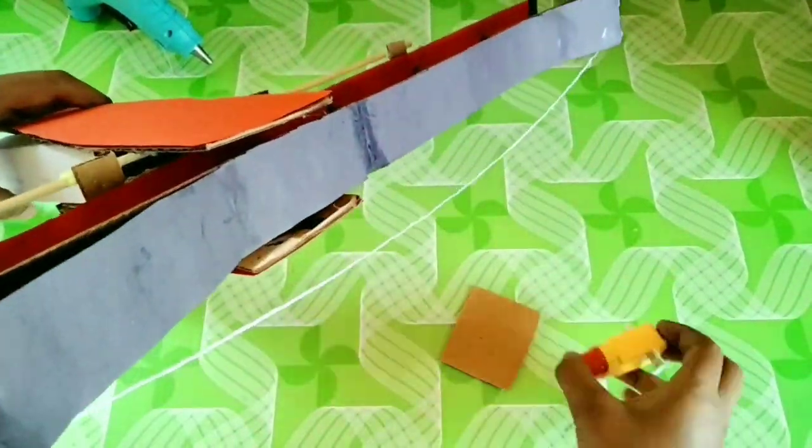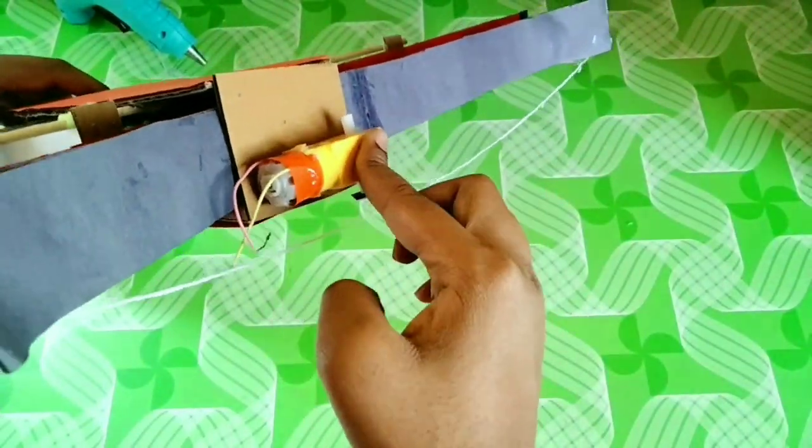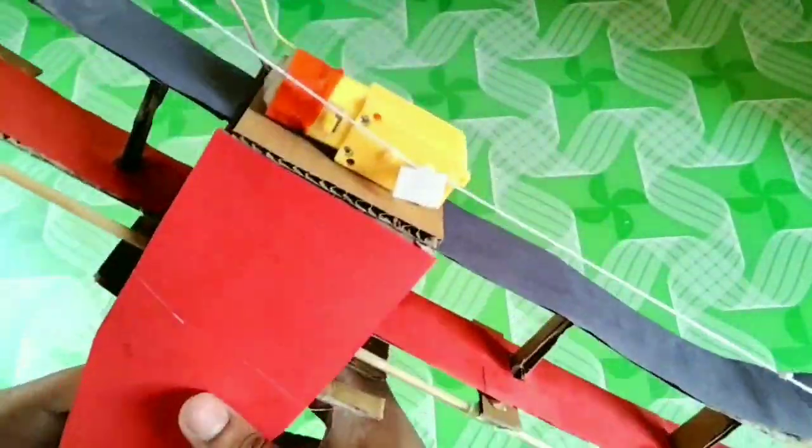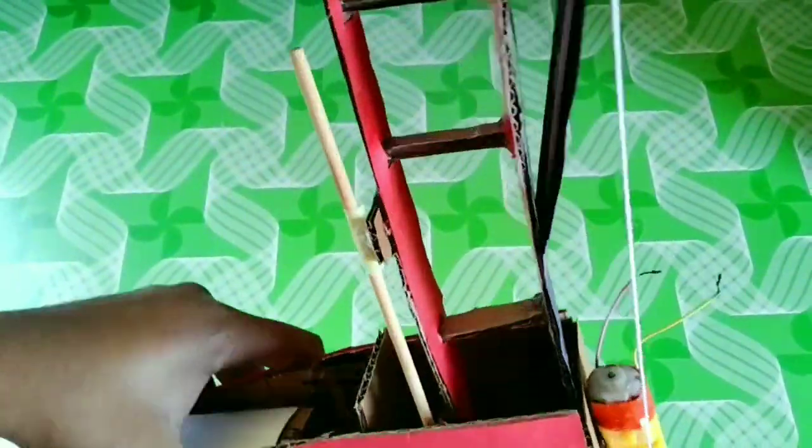Now paste the gear motor on the cardboard and then paste it on the top as shown above. Roll the thread around the shaft of the motor as shown above.